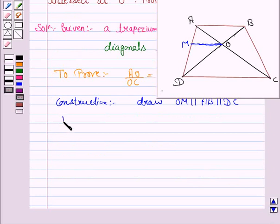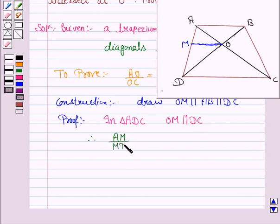So let's now start the proof. In triangle ADC, OM is parallel to DC. Therefore, by basic proportionality theorem, AM upon MD is equal to AO upon OC by BPT, the basic proportionality theorem.